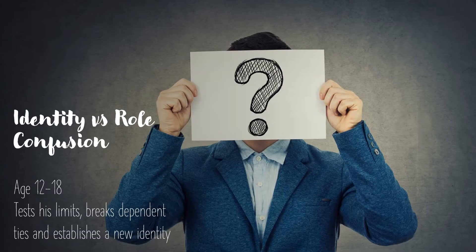The fifth stage is identity versus role confusion, age 12 to 18. At this time, the child tests their limits, breaks dependent ties, and establishes a new identity — separating oneself from one's parents. If they fail in this attempt, they experience role confusion.